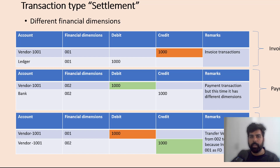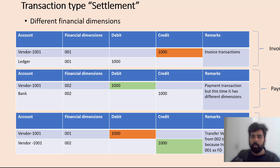Today we are going to talk about a very common scenario which you all would have seen in finance. We are going to talk about the transaction type which is settlement on the vendors and the customers.